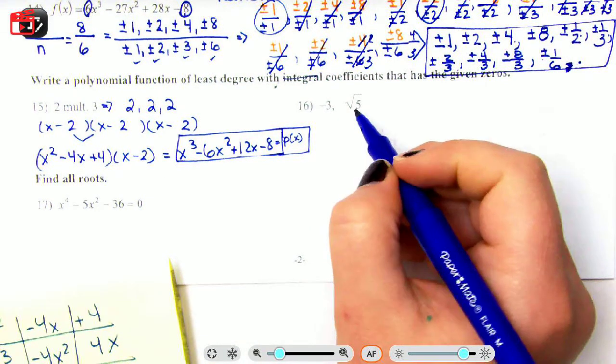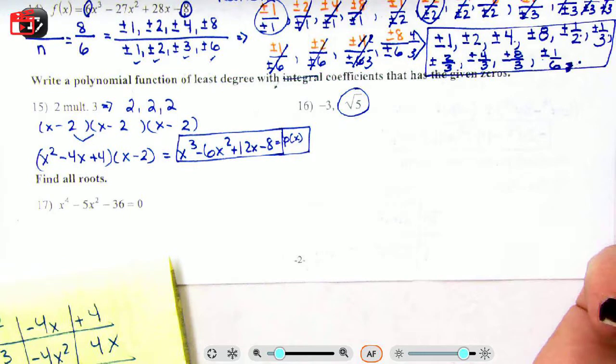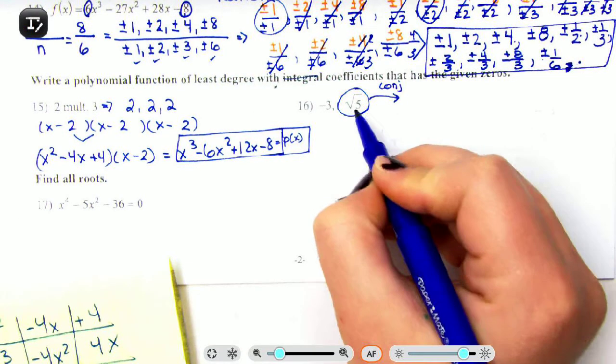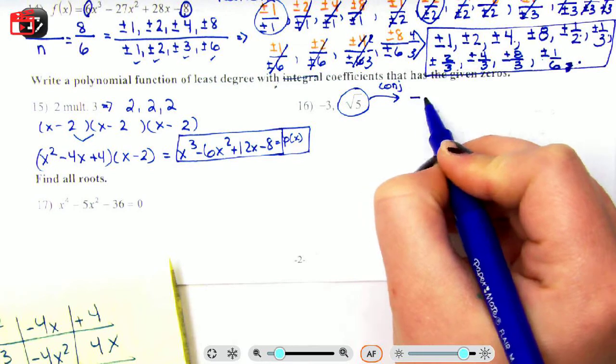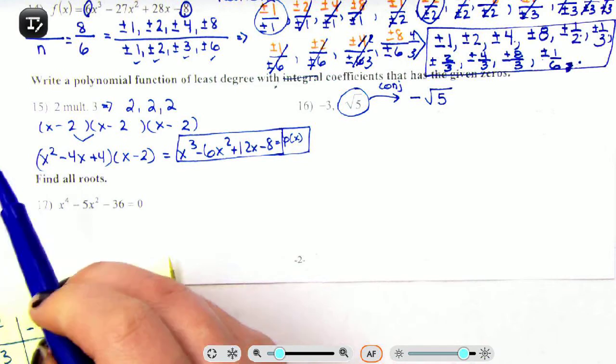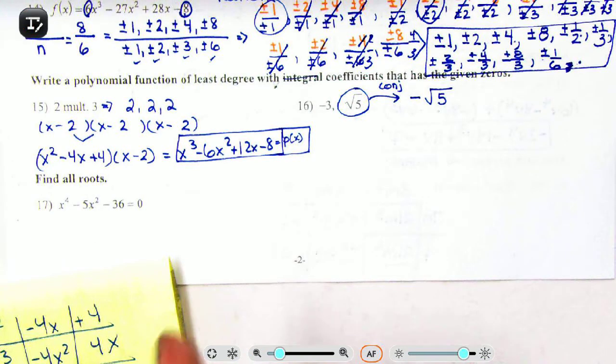All right, this one here, something that should jump out at you immediately is this √5. The conjugate exists, so not only do you have √5, you also have -√5. So either you have both or you have none; you can't have just one.